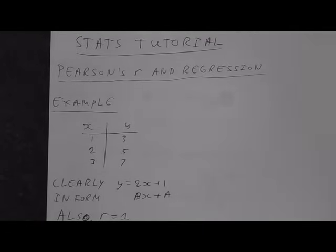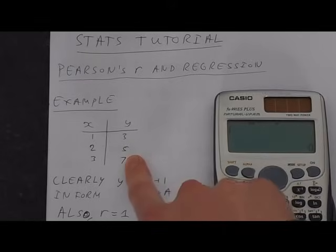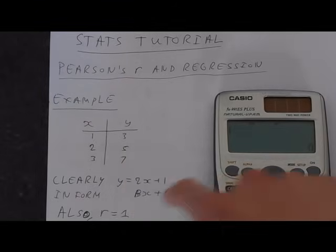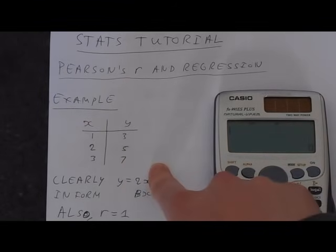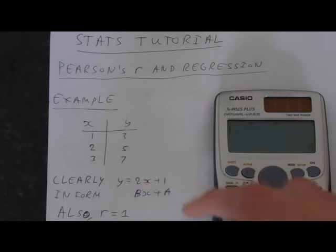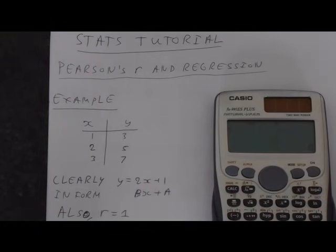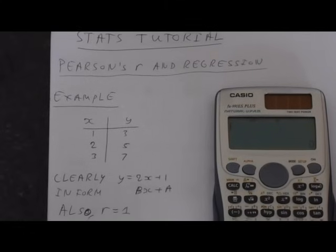Let's do this on the calculator. We're going to take this data, and we're going to find the equation of a line that best approximates that data, and we'll find the correlation coefficient to see how good that line is.